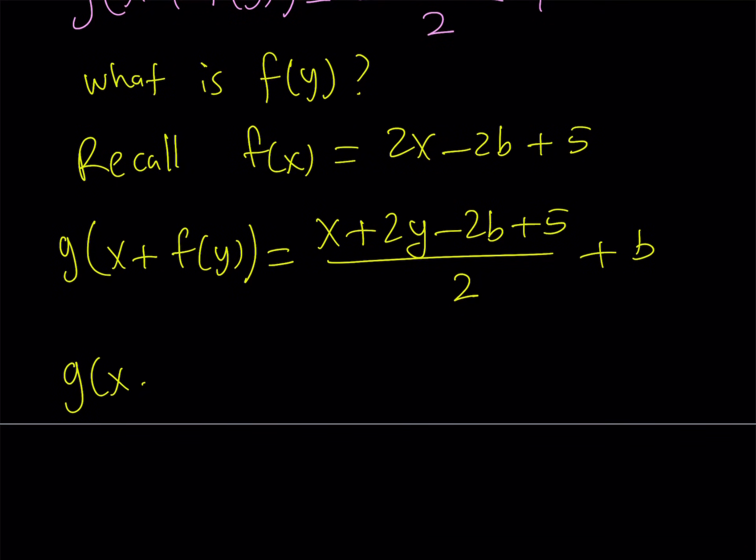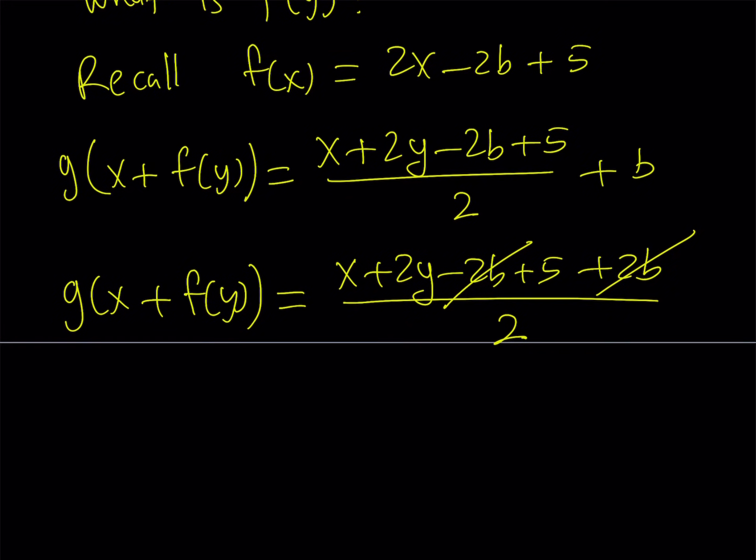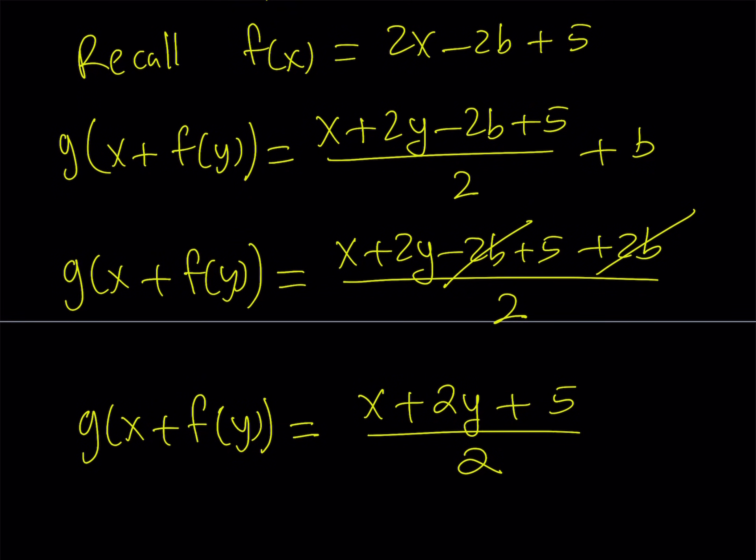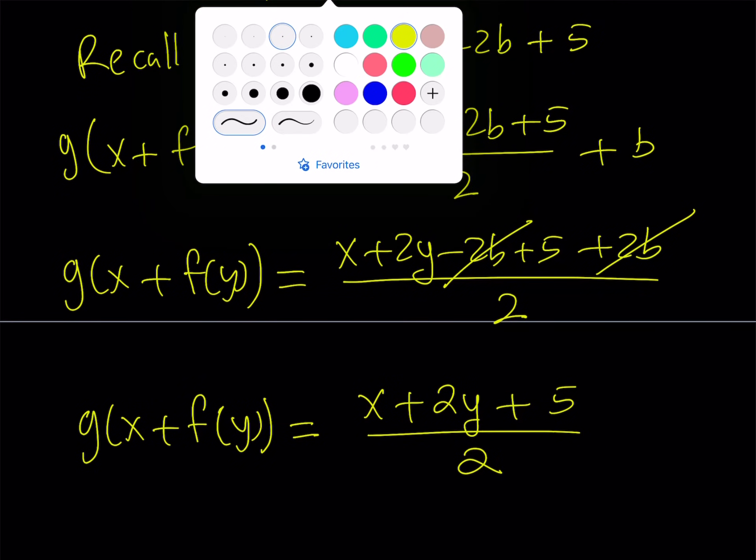And now from here, I'm finding the answer. g of x plus f of y equals, and I'm going to make a common denominator, x plus 2y minus 2b plus 5 plus 2b all over 2. And now we can say 2b or not 2b. And we get our answer. g of x plus f of y is what we were trying to find. And that is equal to x plus 2y plus 5 divided by 2. So we got what we needed, and this brings us to the end of this video.